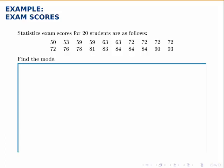This data set represents statistics exam scores for 20 students, and we're asked to find the mode. The mode is simply the most common data value, or the data value that appears most often. Looking through this data set, it's clear that 72 is the number that appears most often. It appears five times, so the mode is simply 72.